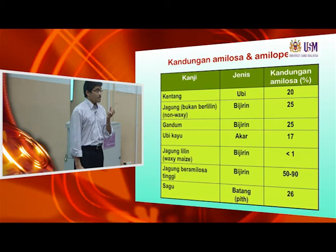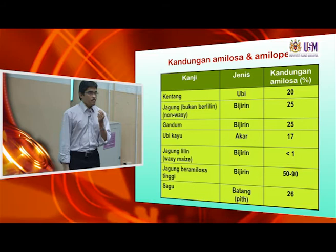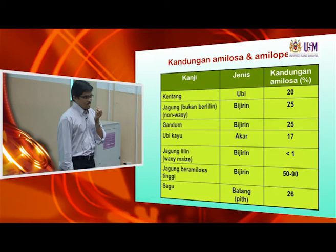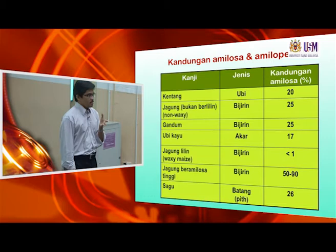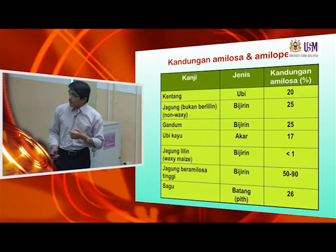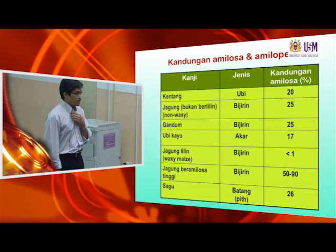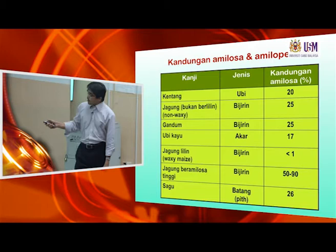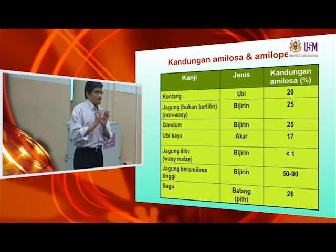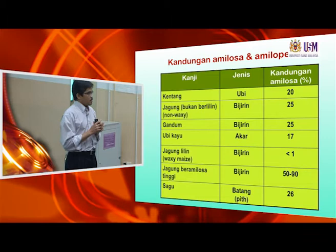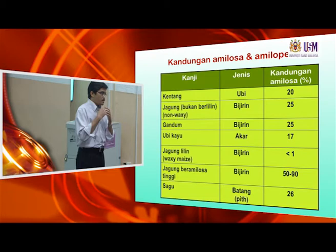Mung bean, peas — kacang pea — those contain quite a high amount of amylose, maybe around 40 to 50 percent. But the most common type of high amylose starch is high amylose corn. The different ratio between amylose and amylopectin will influence the properties of the starch in terms of swelling, gelatinization, retrogradation, and texture.